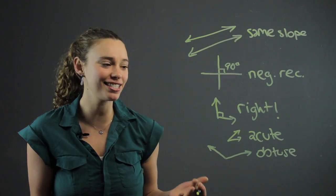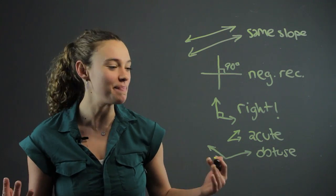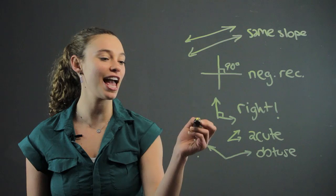Obtuse is huge. I mean, that sounds like a word that would be big, right? Obtuse, right? It sounds like something big. That's a big angle. So that's the difference between those three angles.